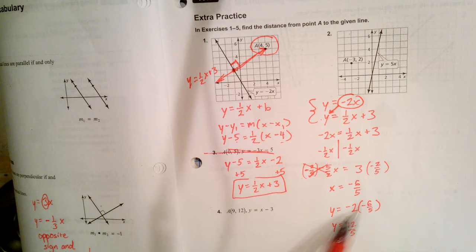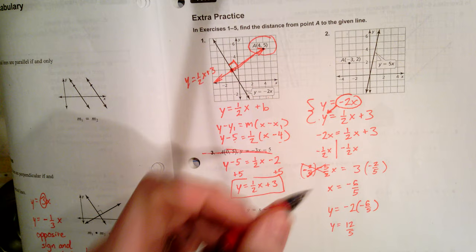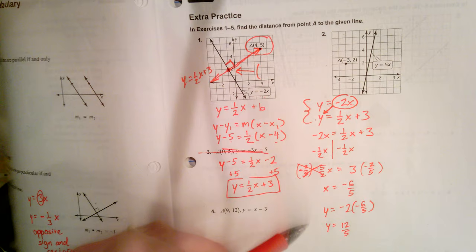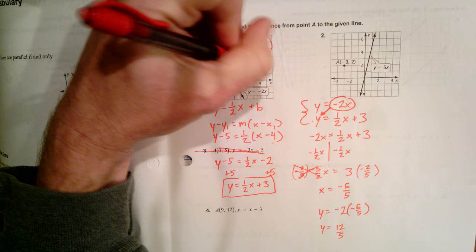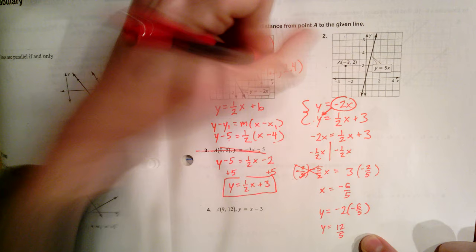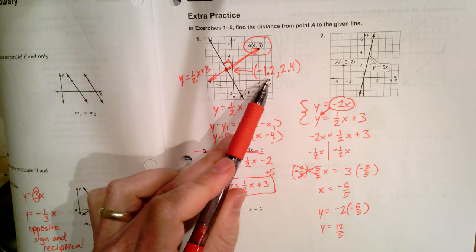That would be negative 2 and a half x equals 3. And a technique we learned earlier in the year to solve when we've got a fraction coefficient is to multiply by the reciprocal. So I'm going to multiply both sides by negative 2 over 5. That allows me to cancel this out and get x is equal to negative 6 over 5.